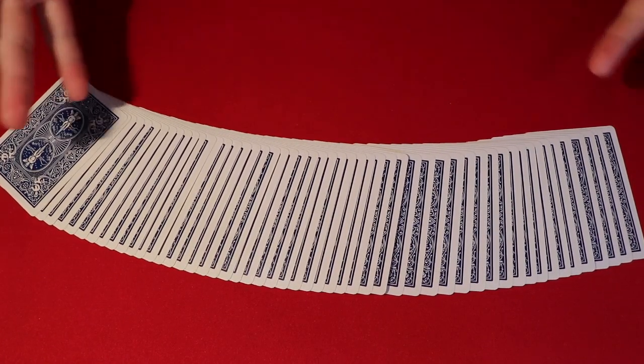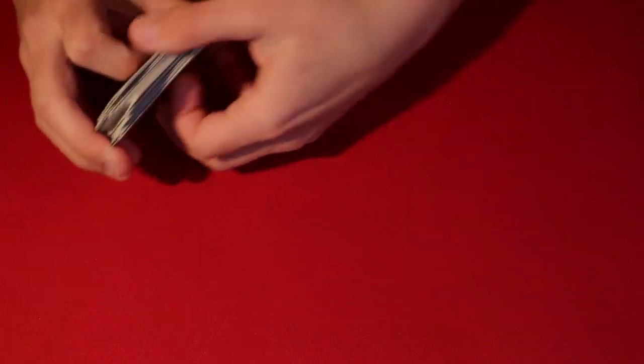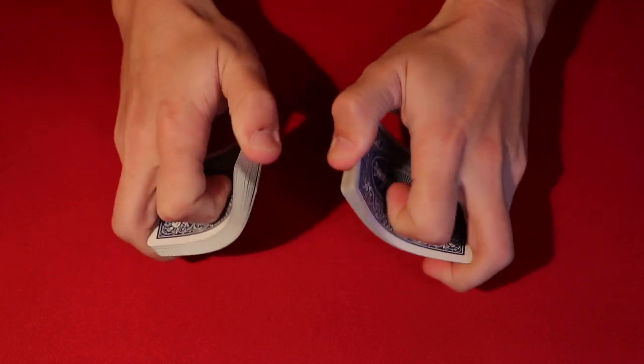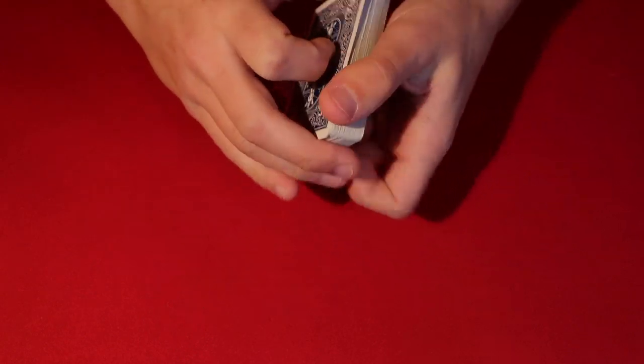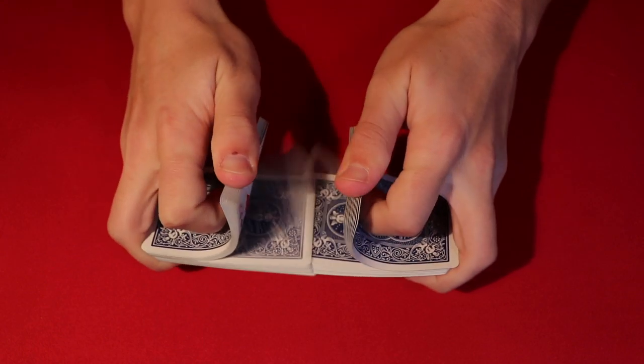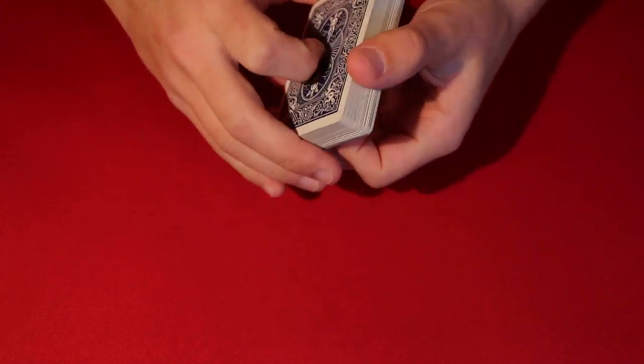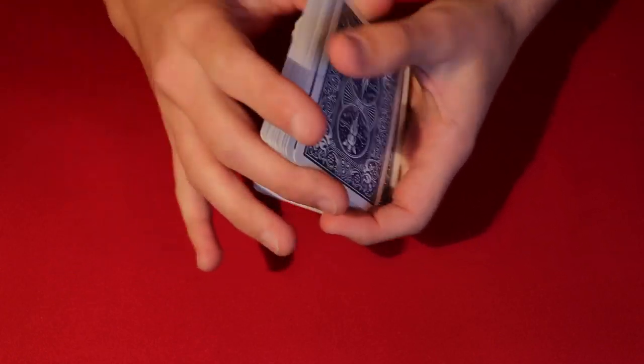Square it up. And then you leave it on the table like this. And it looks like obviously you have no idea where the card is. And then you can shuffle the deck. I wouldn't recommend shuffling it too many times riffle shuffled because then eventually you're going to bend the card back to its normal position.